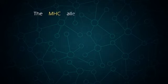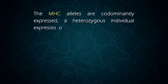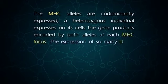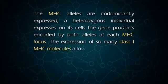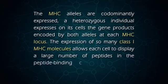MHC molecules can bind many different peptides since the MHC alleles are co-dominantly expressed. A heterozygous individual expresses on its cells the gene products encoded by both alleles at each MHC locus. The expression of so many class 1 MHC molecules allows each cell to display a large number of peptides in the peptide-binding clefts of its MHC molecules.